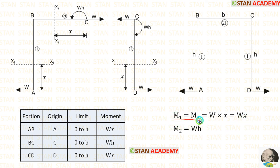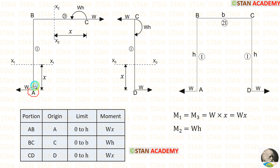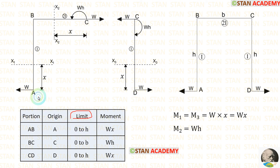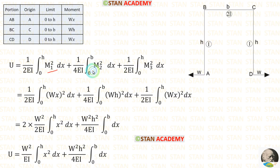If you want, you can make a table, but it is not necessary. For AB, the starting point is A — we are starting the section from point A up to X, so origin is A. For BC, the origin is point C. For CD, the origin is D. The limits are: for AB, 0 to H; for BC, 0 to B; for CD, 0 to H.